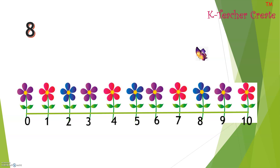Eight minus five equals. Circle the bigger number, which is eight.